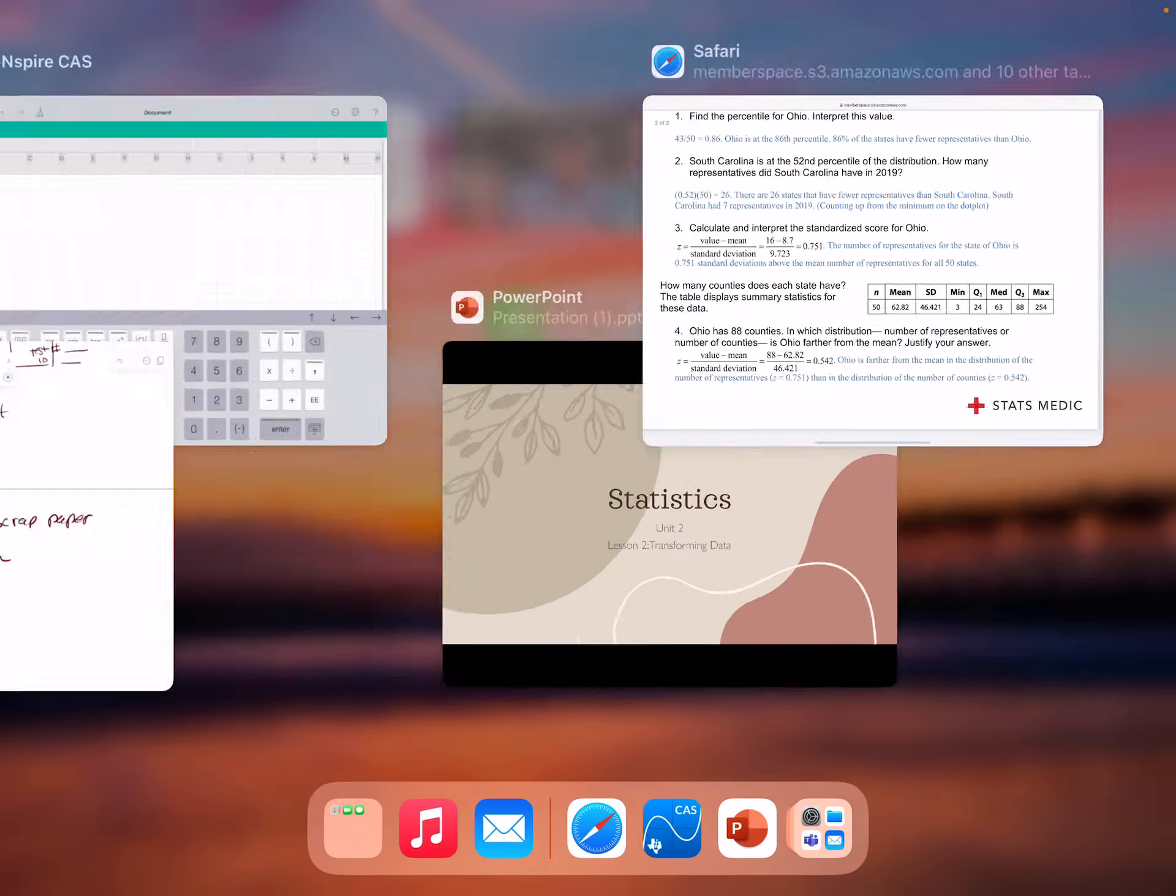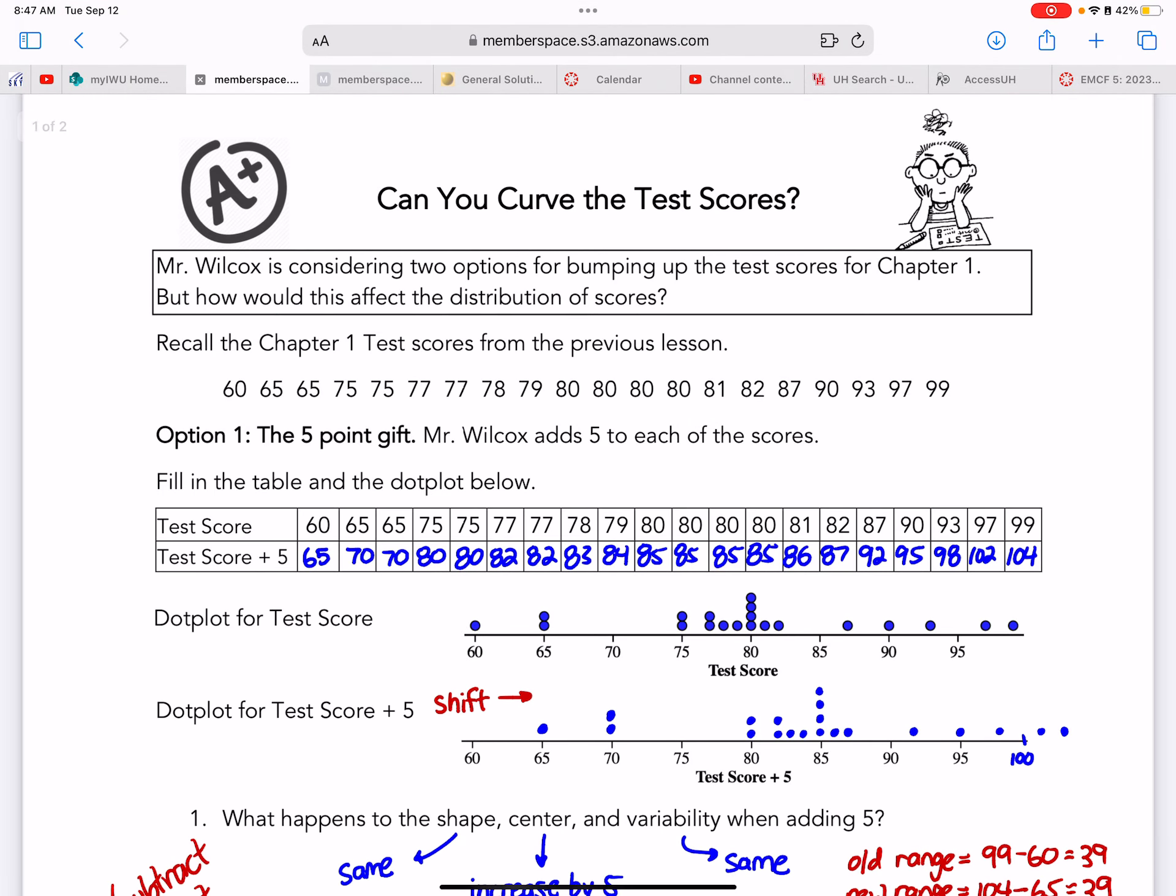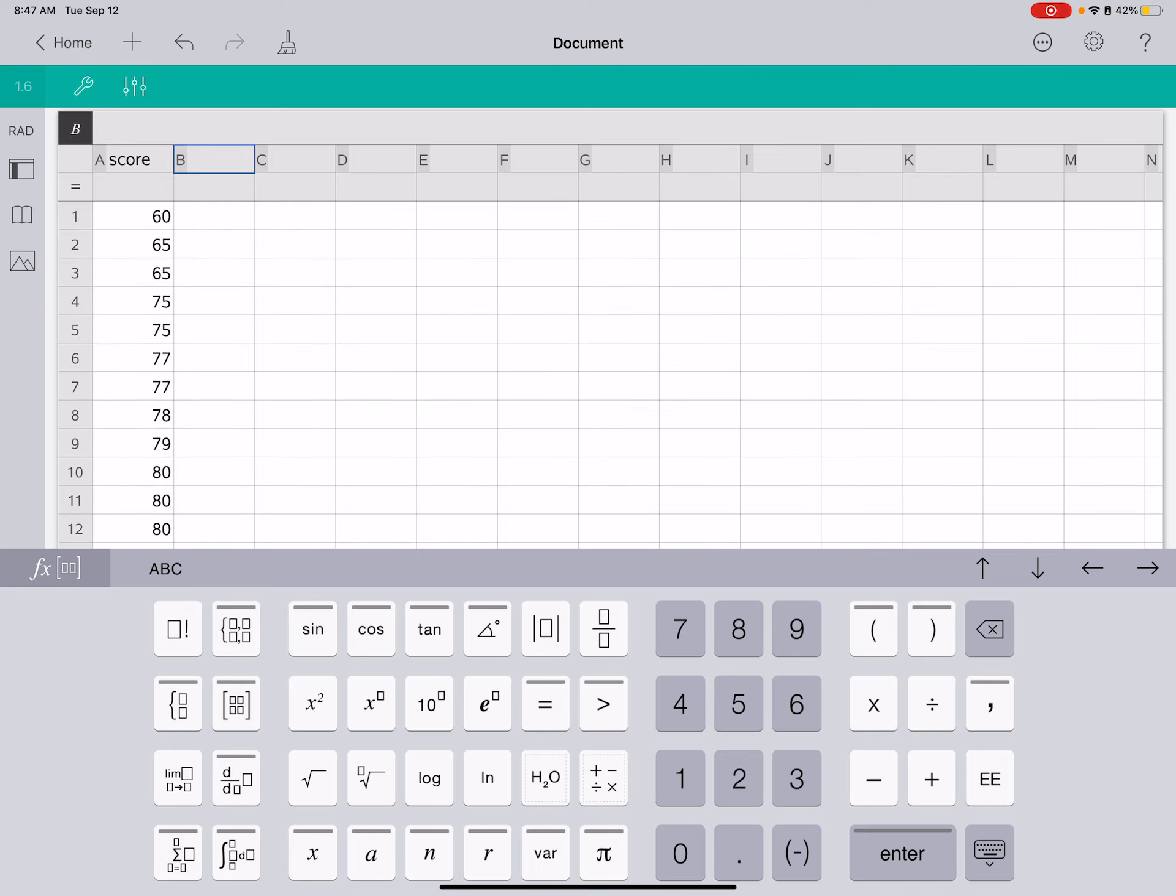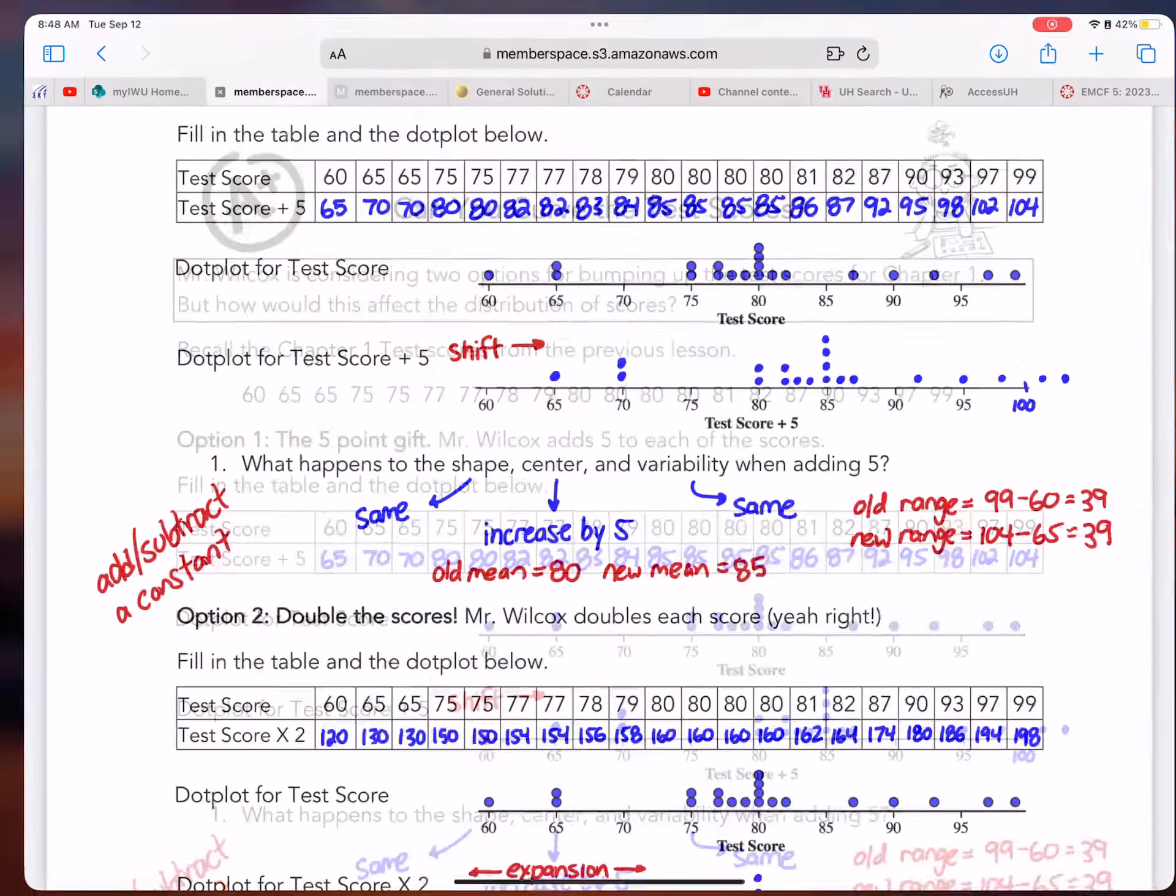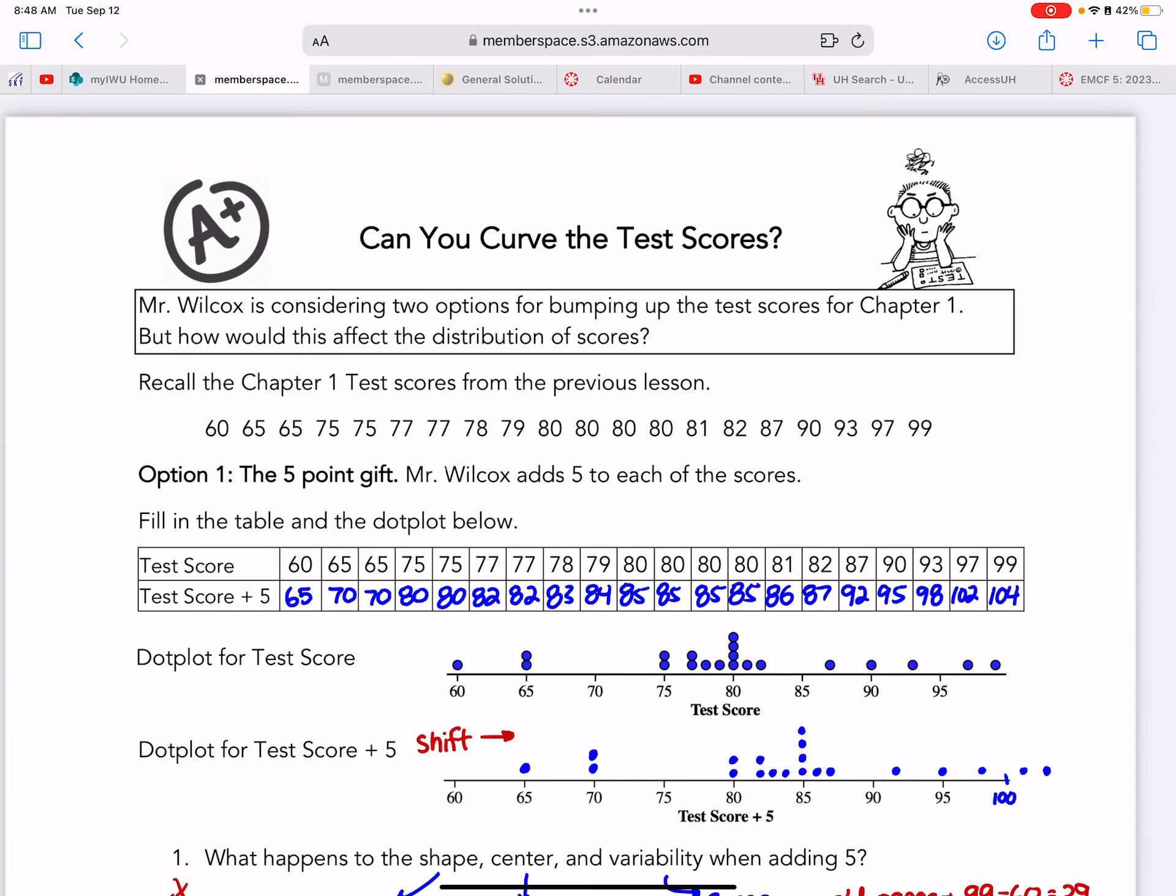Let's jump to our lesson today. Our lesson today is can you curve the test scores? Lesson two, transforming data. The first thing we're going to do is put the test scores in your calculator and make the dot plot. I put the test scores here and I put score here. Actually, I already sent it to your calculator, so if you look at the calculator, you're going to see everything already there. Then we're going to make a dot plot. I'm going to add, and I called it score. And there's my dot plot. Pause the video so you can do all that and then start it again.